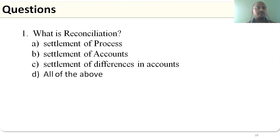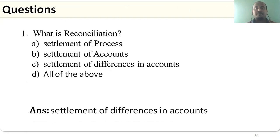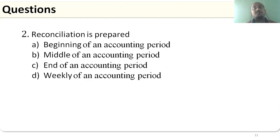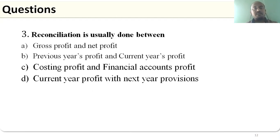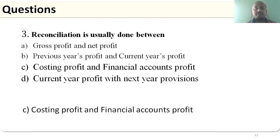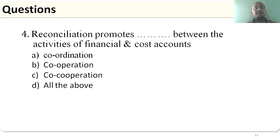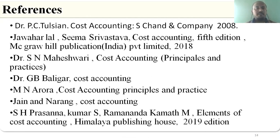Let's have an evaluation. MCQ: What is reconciliation? Options: settlement of process, settlement of account, settlement of differences in accounts, all of the above. The answer is: settlement of differences in accounts. When is a reconciliation statement prepared? At the end of the accounting period. Reconciliation is usually done between costing profit and financial accounts profit. Reconciliation promotes coordination between the activities of financial and cost accounts.